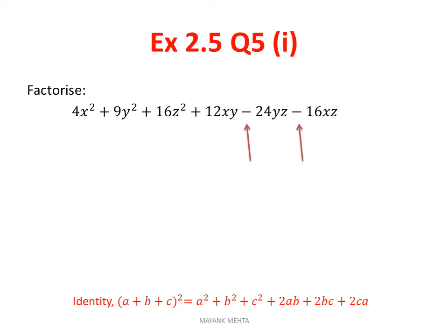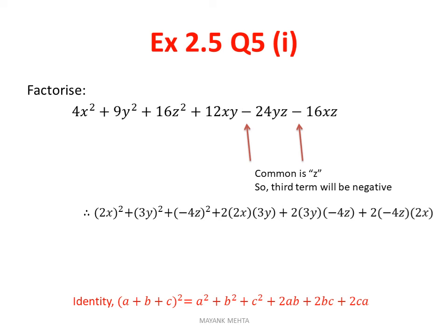Here look, you have the last three terms. In those you have to see the signs, because the first three terms are perfect square terms, they will always be plus. In the last three terms, the last two terms are minus. The last two terms are minus, so which variable is common in them? One is yz, one is xz. So z is common. So when you factorize, you have to put a negative sign in the z term. That means 4x² I will take as (2x)², 9y² I will take as (3y)², 16z² I will take as (-4z)².